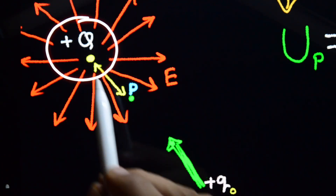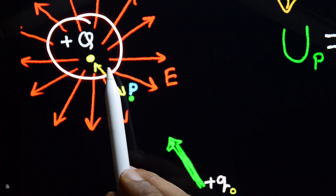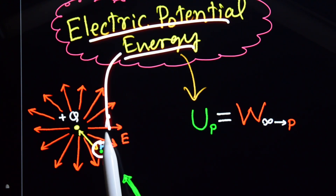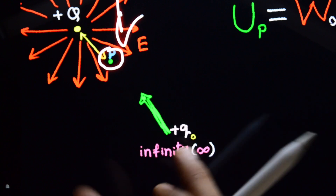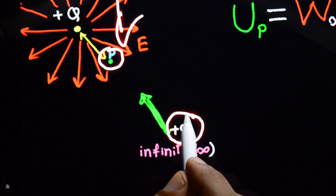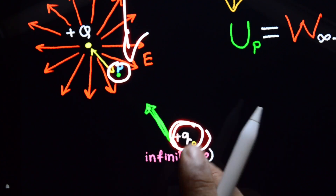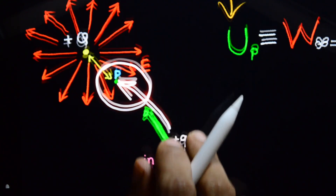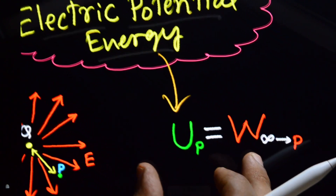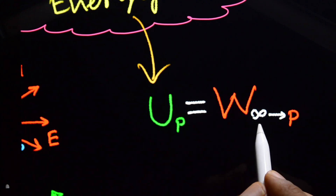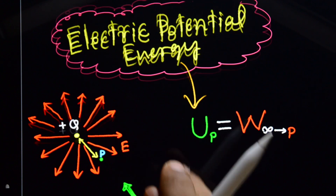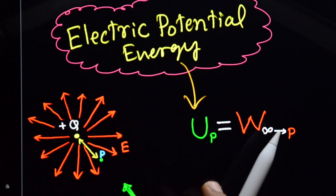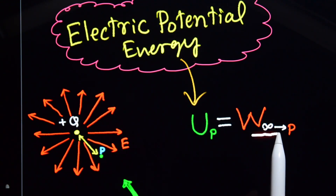Suppose this is a source charge — a big charge. Here at point P, we need to find the electric potential. To define it, you need to bring a test charge Q0 — that is a small positive charge — from infinity to point P. The electric potential energy, denoted by U, is equal to the work done in moving a test charge from infinity to the point P.